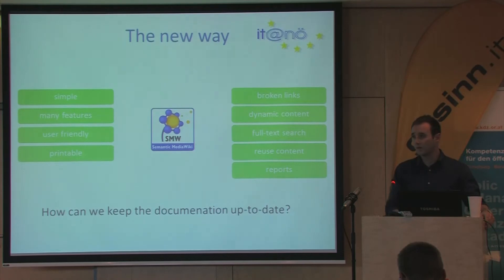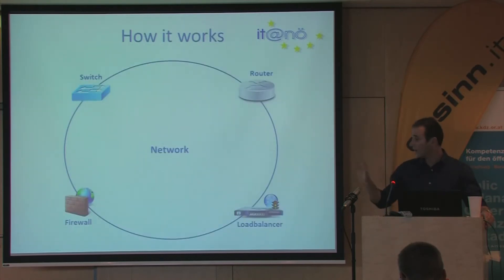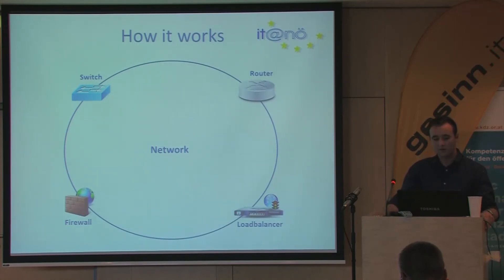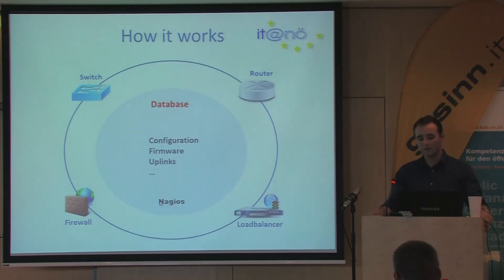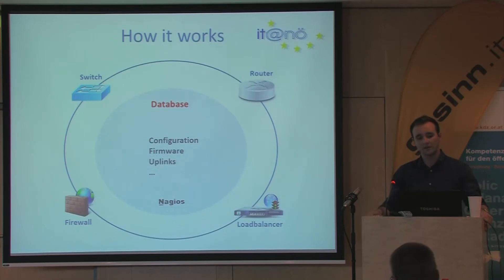That's why I had to design a whole new system. Here you can see our network infrastructure with switches, routers, firewalls, and so on. We collect all the information that we need from these devices and store it in a database — like the firmware, the IP addresses, the uplinks, VLANs, and so on. We do this with our monitoring system, Nagios in our case. The benefit of doing this with Nagios is that we can be sure that the information in the database is always up-to-date. Because if there is any problem with the collection process, we get a notification and can solve the issue.